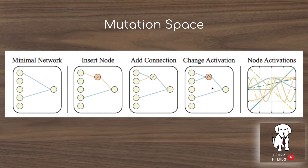This is the mutation space that the evolutionary algorithm uses to explore different neural network architectures. It can either choose to add a node, insert a node to the network, add a new connection, or change an activation function — for example, changing the activation function from sigmoid to tanh or ReLU. This shows the different activation functions it's allowed to choose between.